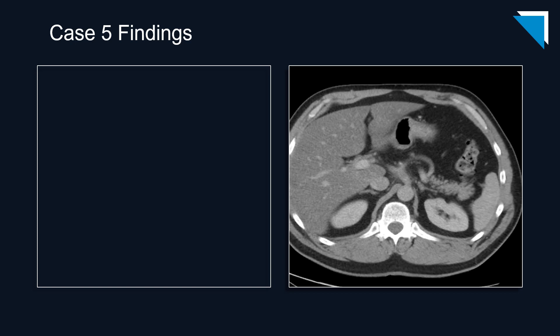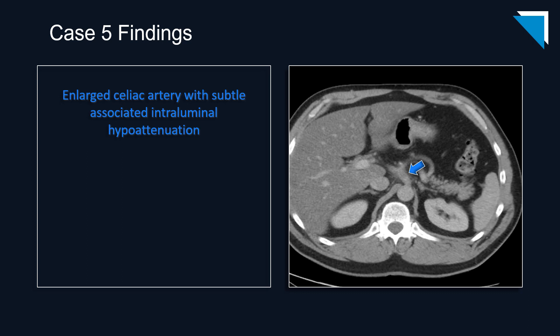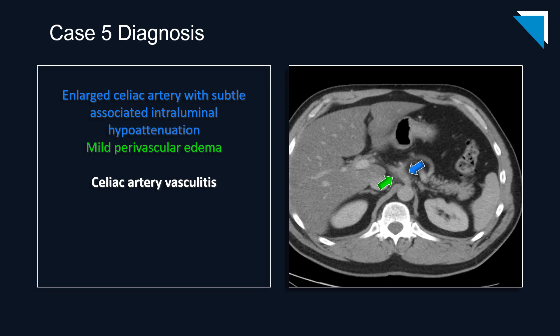I wanted to show this case because a lot of us omit the mesenteric vasculature from our search patterns, particularly if there's nothing in the clinical history directing us there. In this case, the celiac axis is abnormal — it's enlarged with very subtle associated intraluminal hypoattenuation and mild perivascular haziness. The findings are concerning for nonspecific vasculitis, but I'd recommend a follow-up CTA to rule out dissection or potentially partial thrombosis. That's it for this segment — thanks for joining me, I hope you found it informative, and I will see you next time.